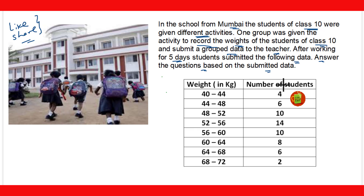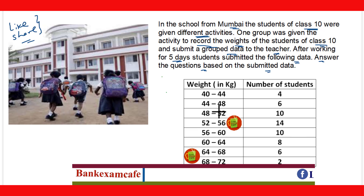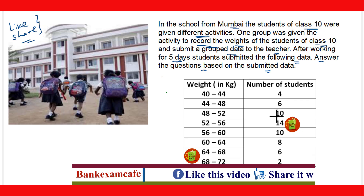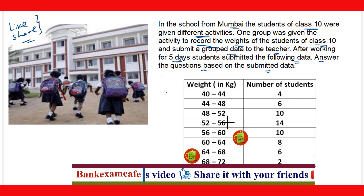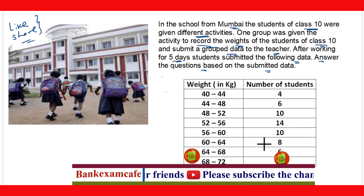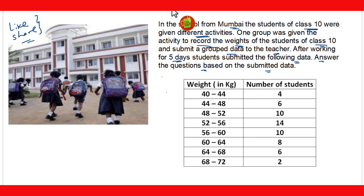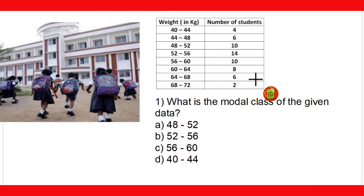The data shows weight in kilograms and the number of students. In the 40–44 kg group there are 4 students, in 44–48 kg there are 6 students, in 48–52 kg there are 10 students, in 52–56 kg there are 14 students, and so on. We have to answer the questions based on this data submitted by the students to the teacher.